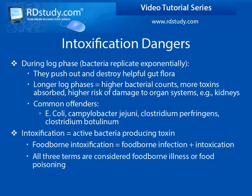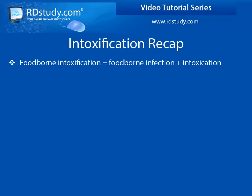All three of these foodborne conditions are considered foodborne illnesses and foodborne poisoning. To quickly recap: toxico-infection is when infection — the consumption of live bacteria which creates illness — and intoxication, when toxins produced by those same bacteria are also creating illness, occur at the same time. In order for toxico-infection to occur, active pathogenic bacteria capable of producing toxins must have been consumed and they must be able to replicate.